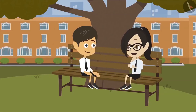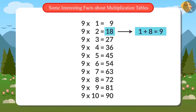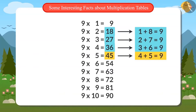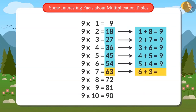Really? I don't believe it. I will do it myself. Third number in the table of 9 is 27. If we add the digits 2 and 7, we get the answer 9. Fourth number is 36. Adding both 3 and 6 also gives 9. Fifth number is 45. Adding digits 4 and 5, the answer is also 9. Sixth number is 54. If we add 5 and 4, the answer is again 9. The seventh number is 63. Adding the digits 6 and 3, the answer again is 9. Wow! This is interesting.